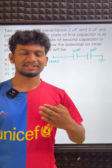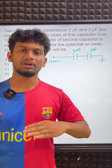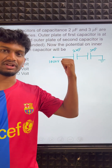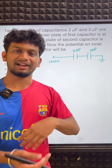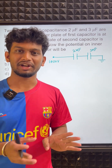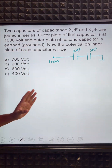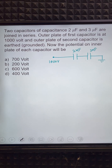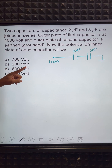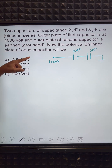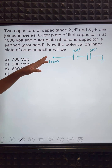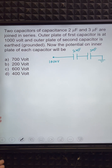In the last video on capacitance, a student asked a question in the comment section and the reply was very informative. The problem: two capacitors of capacitance 2 µF and 3 µF are joined in series. The outer plate of the first capacitor is at 1000 V and the outer plate of the second capacitor is grounded. Find the potential on the inner plate of each capacitor.